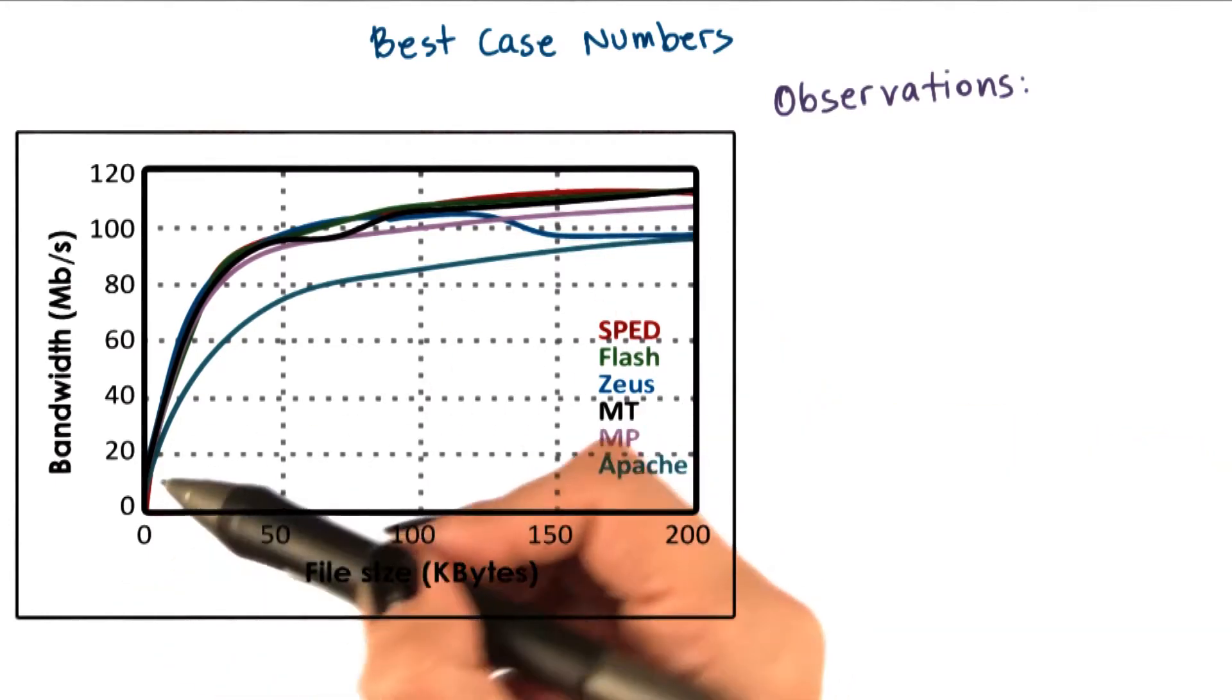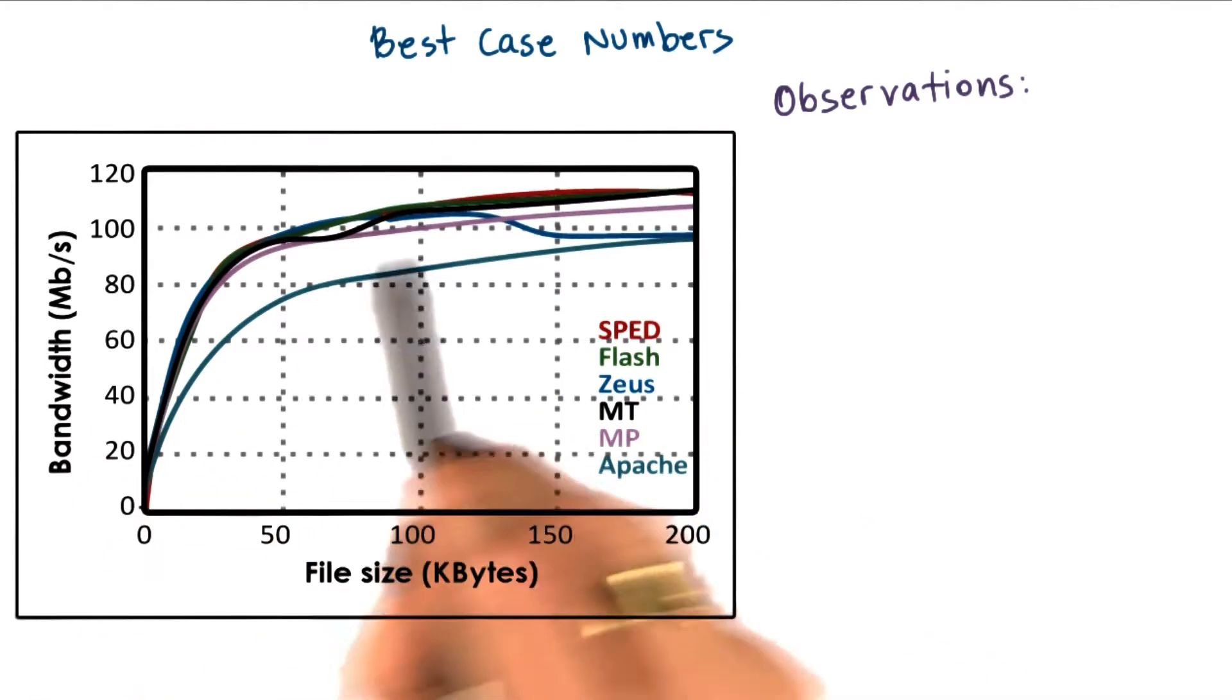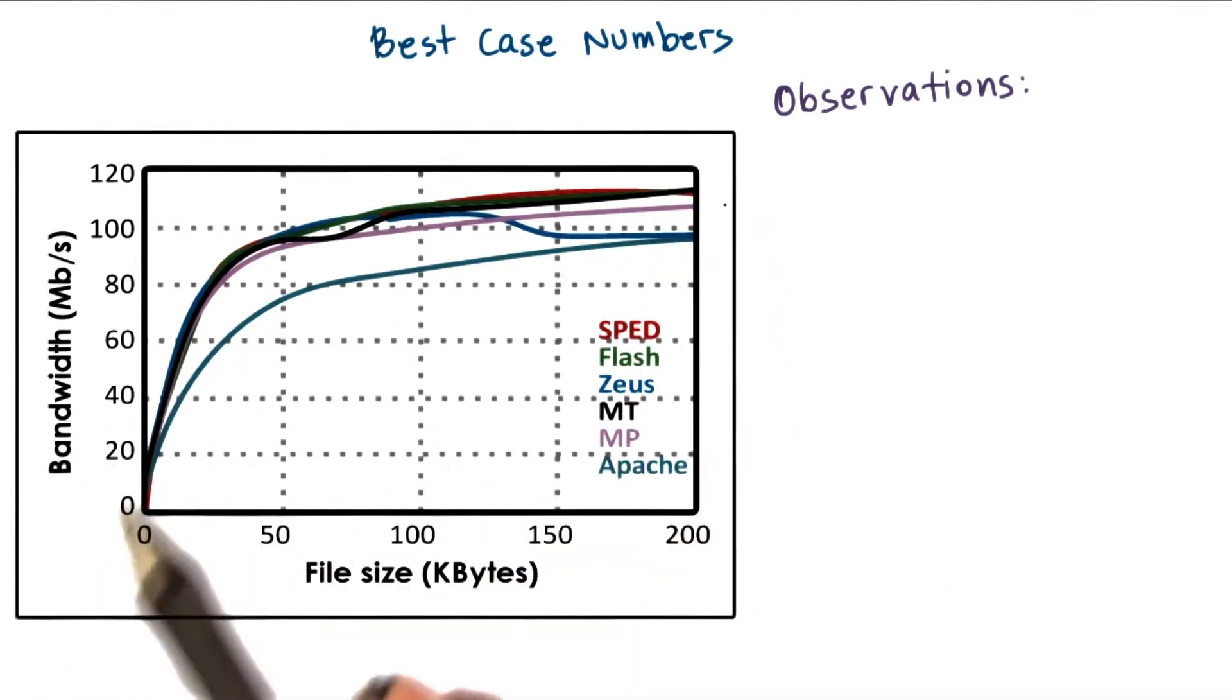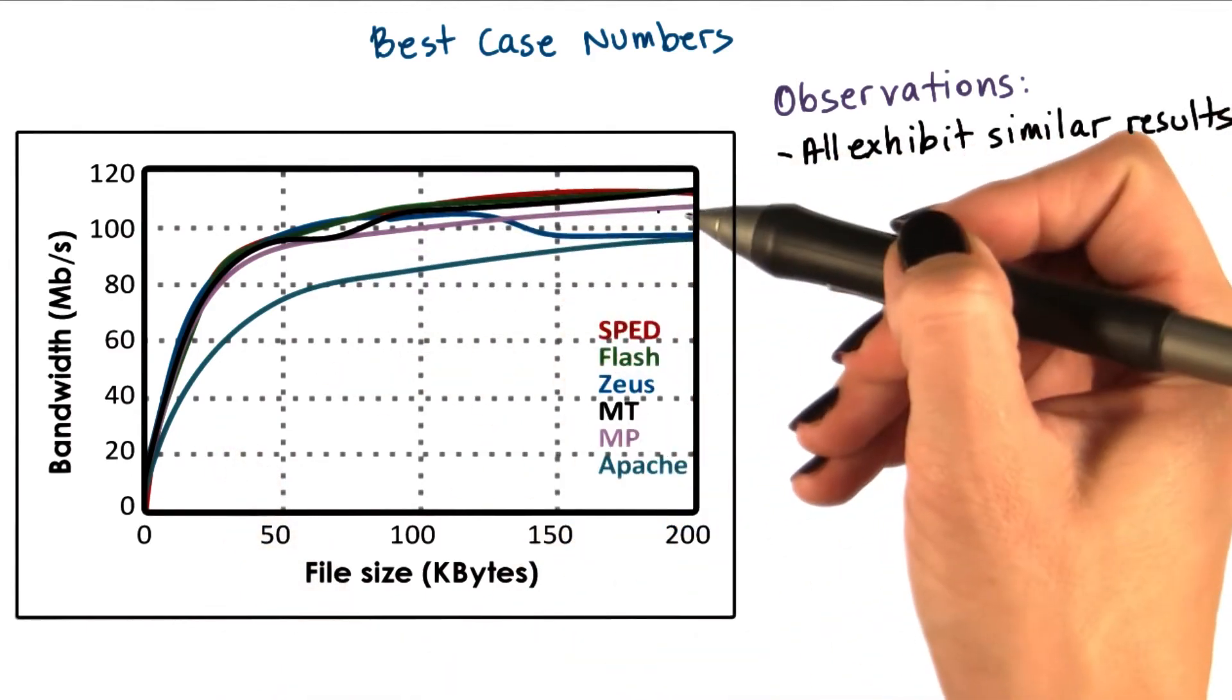First, for all of the curves, initially, when the file size is small, bandwidth is slow. And as the file size increases, the bandwidth increases. We see that all of the implementations have very similar results.